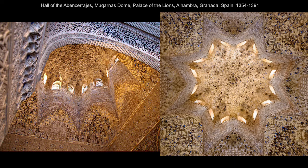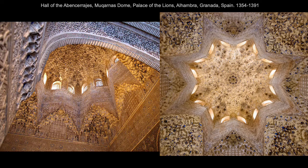Another example of muqarnas is found in the Hall of Abin Serehes — quite intricate, spectacularly carved stucco muqarnas in a star-shaped dome. These are also great for acoustics. The corners are supported by squinches and ball projections that are also filled with more muqarnas, really creating a dematerializing architectural space.